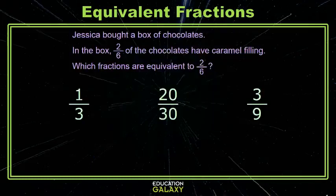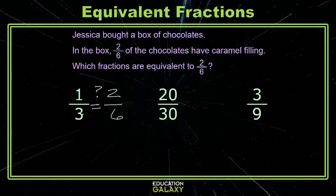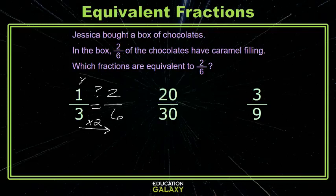Here I'm looking for fractions equivalent to two-sixths. Is one-third equivalent to two-sixths? Well how could I get from three to six? I would need to multiply by two. If I multiply the three by a two I also need to multiply the one by a two and yes this is an equivalent set of fractions.